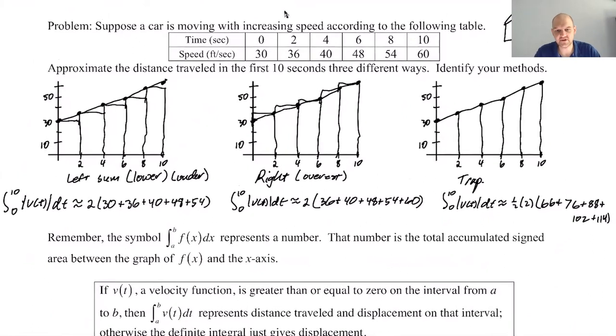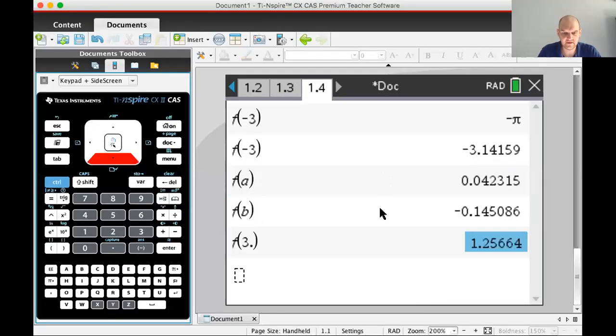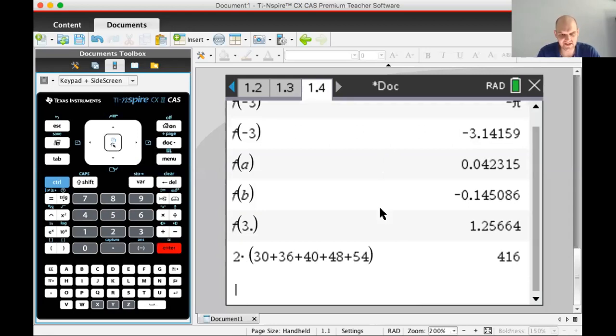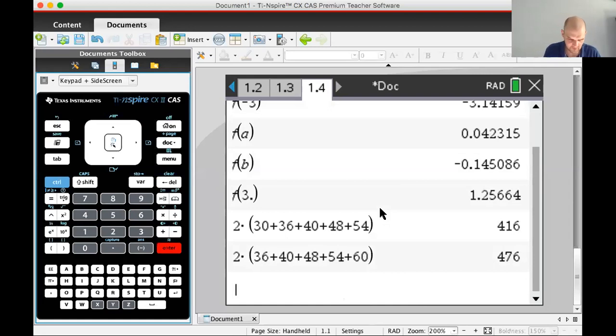All right so now what do we want to do? I want to get these as, I'm going to use a calculator to just knock these out hopefully quickly. So the first one is my left sum. It's 2 times 30 plus 36 plus 40 plus 48 plus—remember on the AP exam you don't need to simplify these, which is kind of weird. So this one I get 416 and that's in feet.